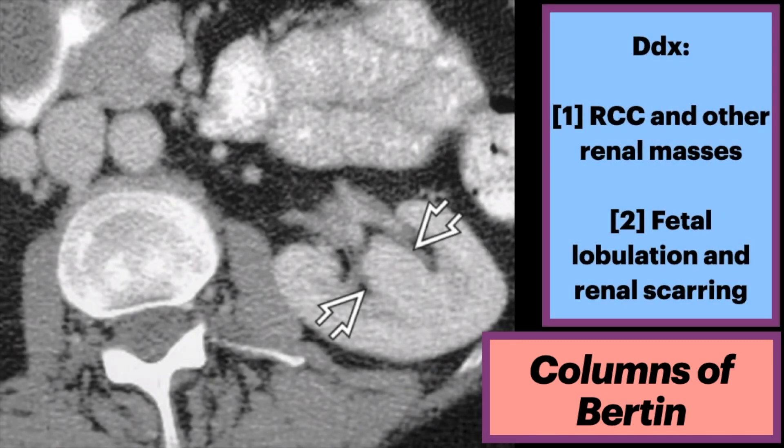The top differential includes renal cell carcinoma and other renal masses, including metastases, oncocytoma, and angiomyolipoma. Unlike the columns of Bertin, these renal masses usually are not isoechoic to renal cortex, and also distort the contour of the kidney.